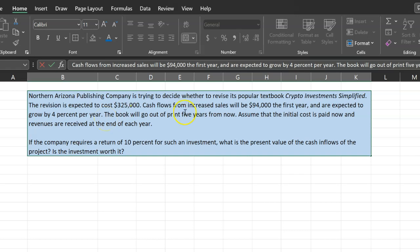The book will go out of print five years from now. So this is a growing annuity. Why? Because in the first year you will get $94,000. Then this amount will increase by a constant growth rate of 4% for a certain number of years, which is five years. So that makes it a growing annuity.